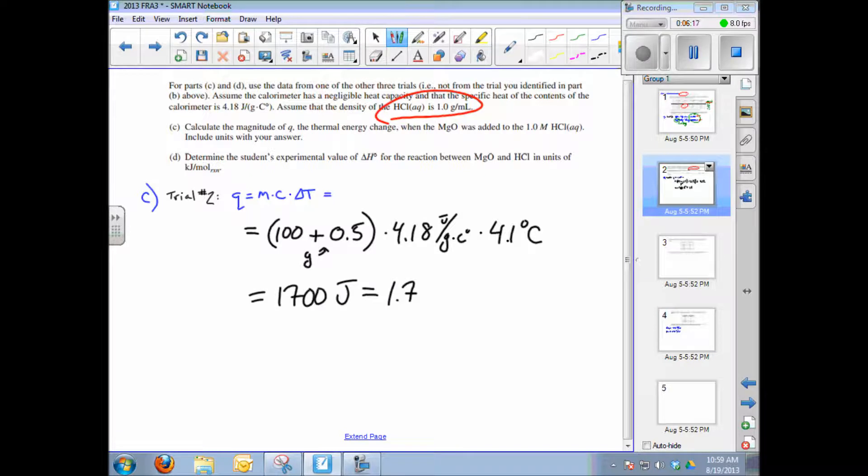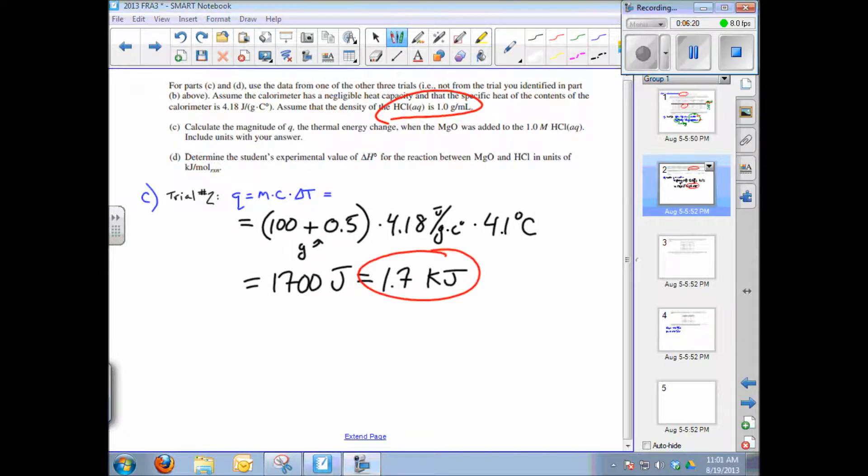Subpart D says determine the student's experimental value of delta H for the reaction in units of kilojoules per mole. Remember that Q of the reaction is equal to the negative Q in the calorimeter. We measure the temperature of the solution in the calorimeter, not of the chemicals themselves undergoing the change, so we reverse the sign. If we measure an increase in temperature, that means the chemicals in the calorimeter have lost energy, so that sign is negative.